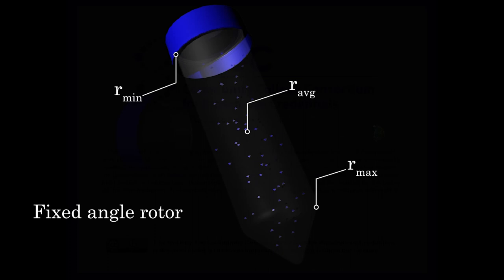You can see from this animation that they do not pellet in the bottom of the tube, but rather spin to the maximum point, the R-max, which is not the bottom. It's near the bottom on the side of the tube. So that is something to watch for when you are spinning samples in a fixed angle rotor.